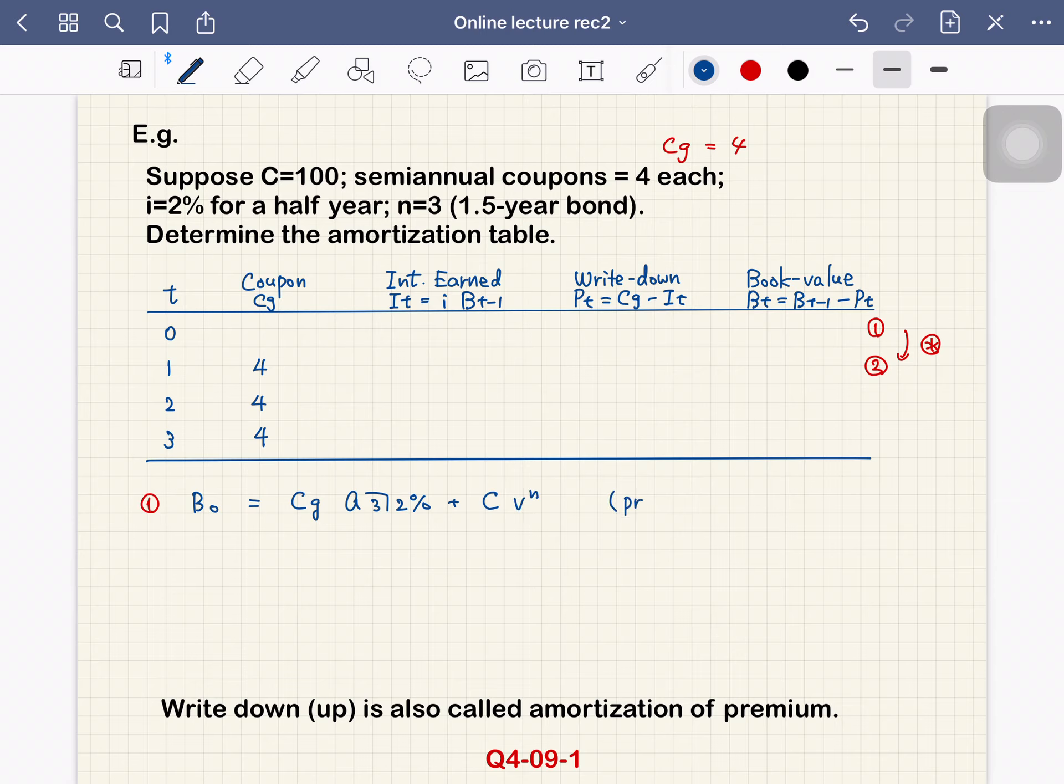This equals 4 times A angle 3 at 2%, plus C times v to the power n, which is 1.02 to the power negative 3. C equals 100.